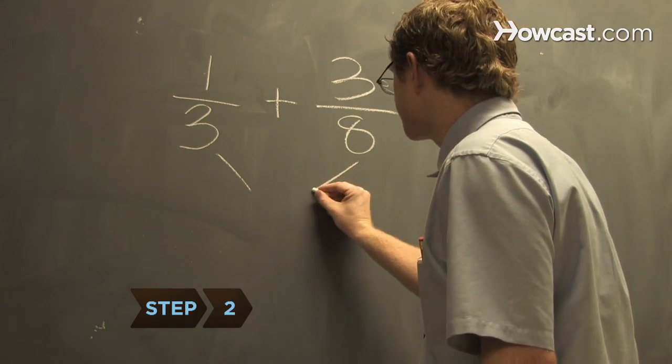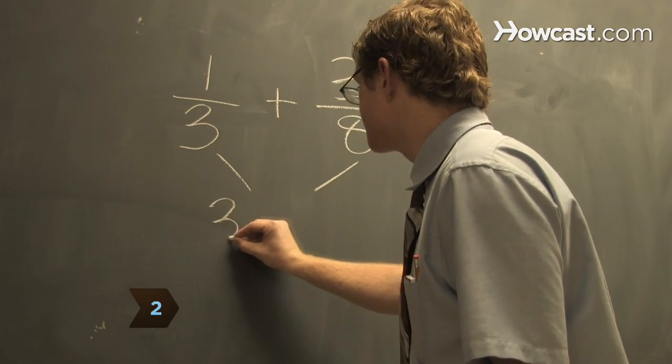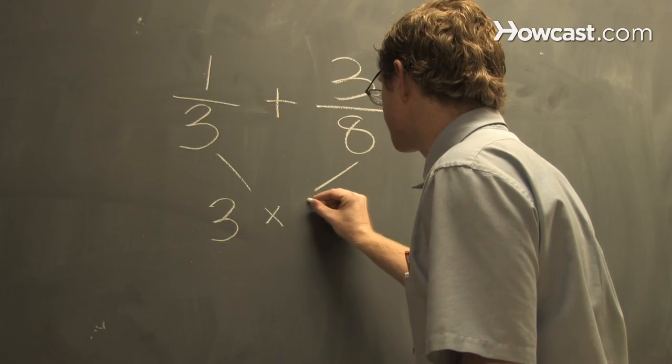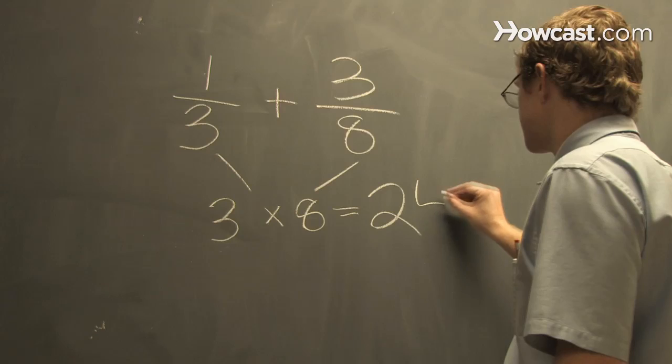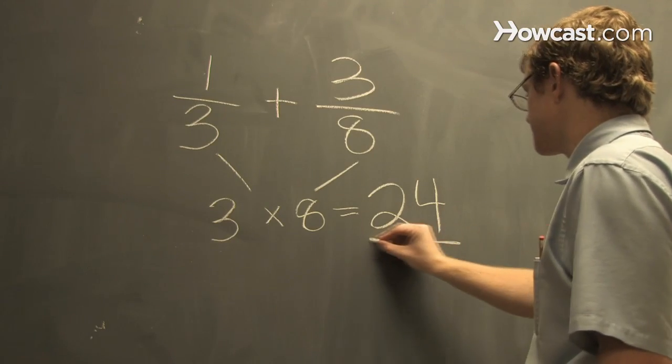Step 2. Find the lowest common denominator to both fractions if they have different denominators. For example, if you add 1 third plus 3 eighths, the least common denominator is 24, since 3 times 8 equals 24.